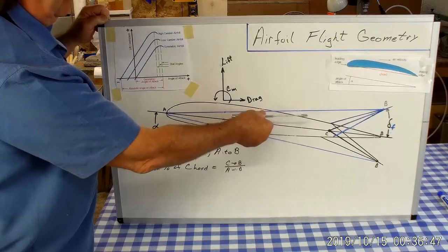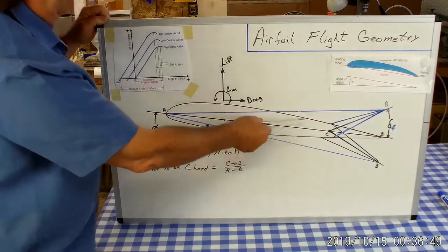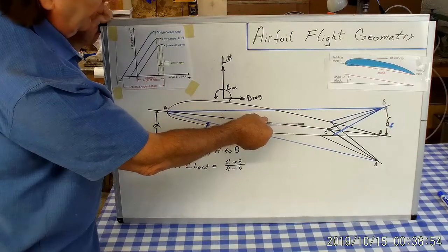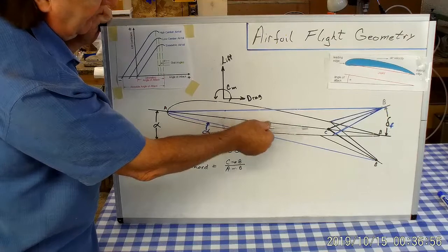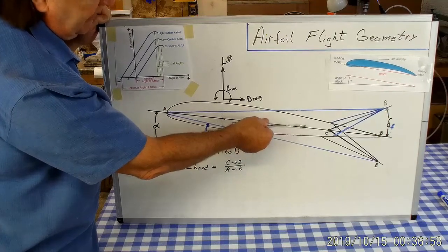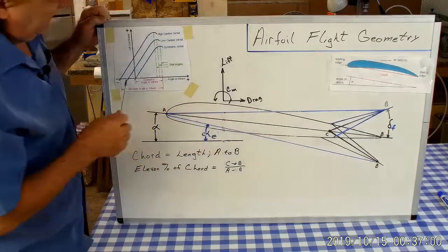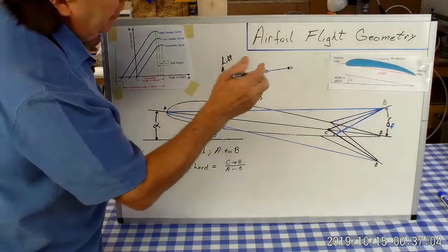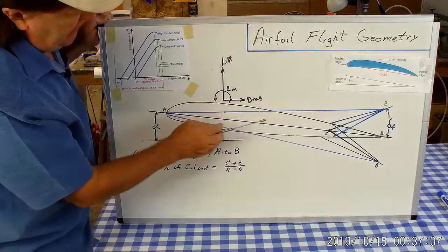You'd have to tilt the airfoil down to get down to zero lift and that would put this cord line, the original cord line, at a negative angle of attack. We've got to get this cord line back to zero, so that pushes that negative and the curve moves this way on the graph.